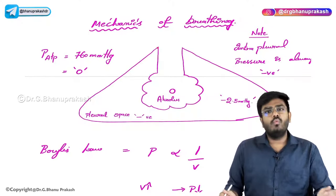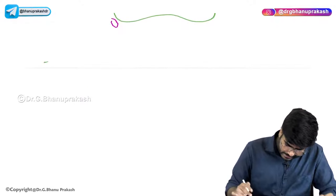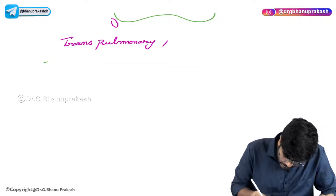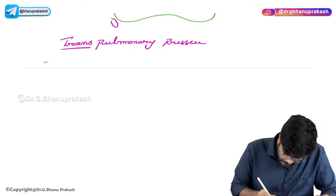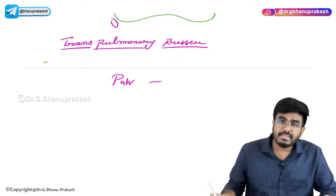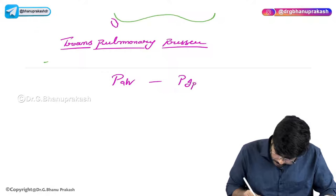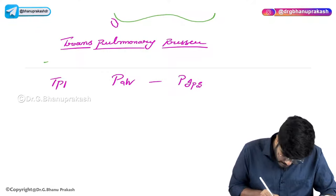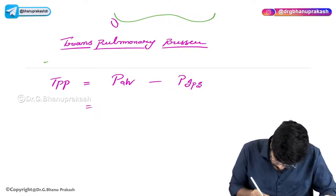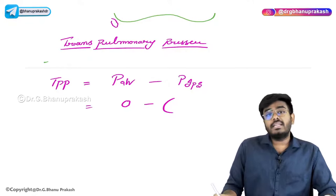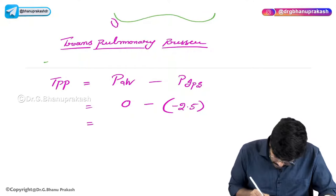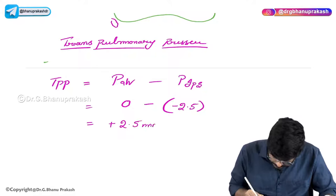One more important pressure is transpulmonary pressure. Transpulmonary pressure (TPP) is the pressure difference: pressure in alveolus minus pressure in intrapleural space. Pressure inside the alveolus is 0, and intrapleural pressure at rest is minus 2.5. So 0 minus (minus 2.5) equals plus 2.5 mmHg — transpulmonary pressure is plus 2.5 mmHg.